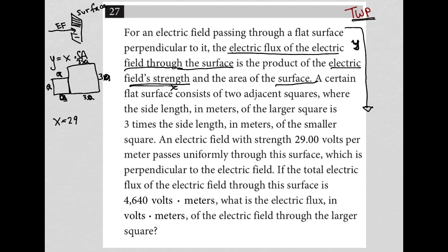passes through uniformly through this surface. Okay, which surface? Well, the surface made up of these two squares. So I can find the surface area of these two squares because the area of this small square is just going to be A squared,